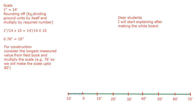For the rounding off process, we consider the ground unit, which is 14, and we select a number nearest to 14 that is easily multipliable. The number nearest to 14 is 10. So we divide 14 by itself and multiply with the desired number, giving us the statement: 0.76 inches equals 10 feet.